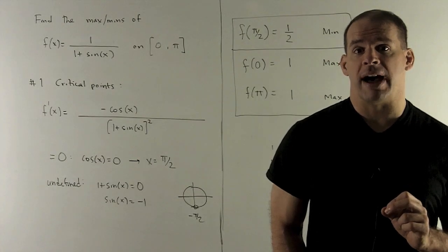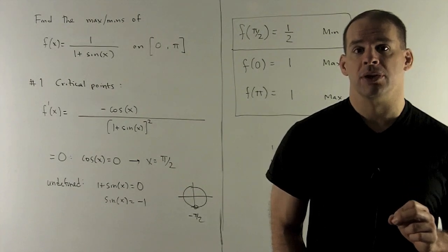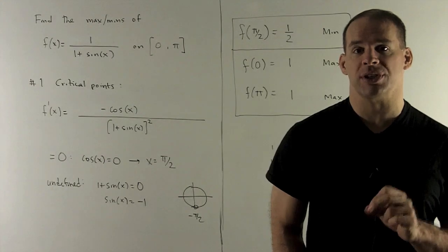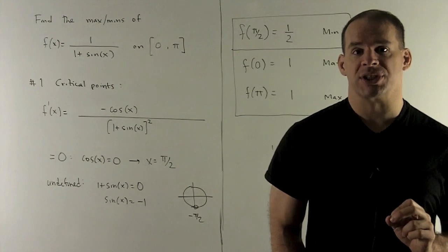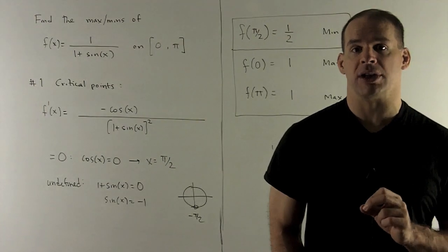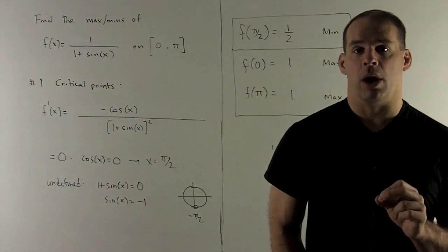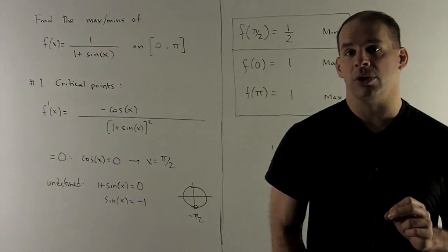For our derivative undefined, that's going to happen where we have the denominator equal to 0. So that'll be (1 + sin(x))² = 0. Square root of both sides gives me 1 + sin(x) = 0, or sin(x) = -1. Now, we note sin(x) = -1, sine is equal to the y value in the unit circle.